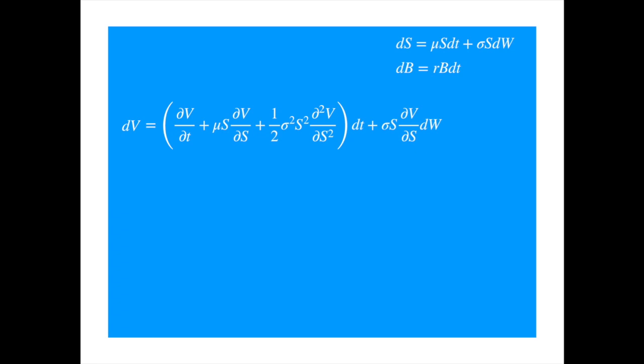Now let's say we bought delta units of the stock, delta here is just the number of units of the stock, and borrowed alpha units of the bank account, where delta and alpha can be negative or positive.